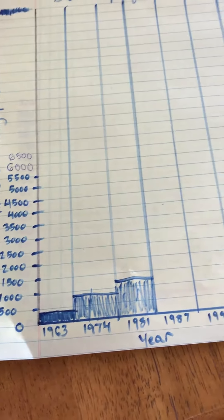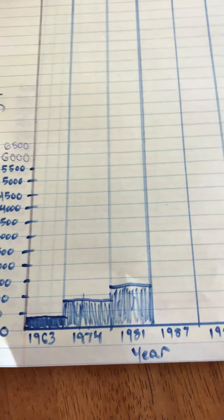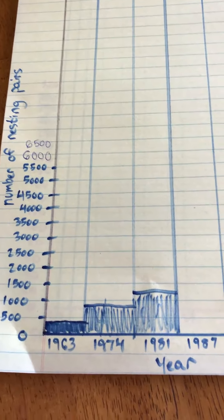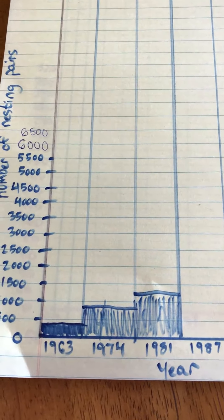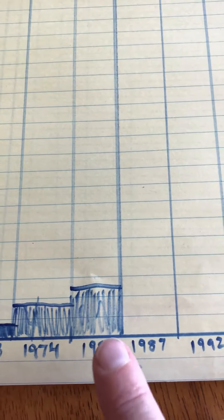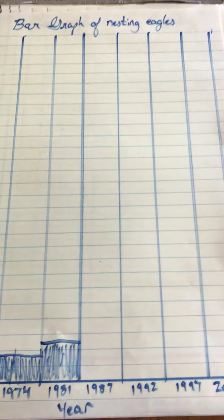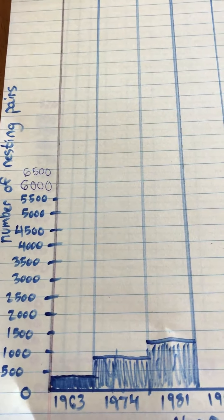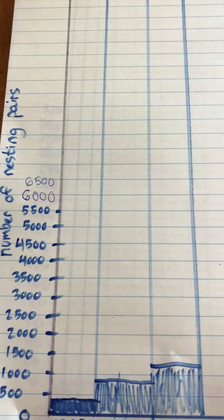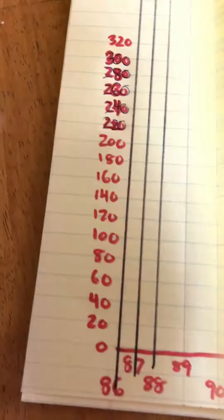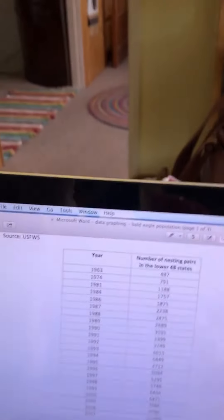Now scientists today, of course, have computers that do this for them. But it's good to learn how a bar graph is created. And I think you'll be surprised to see how the population of eagles goes up when you finish this graph. So you can do one of these graphs at home. I'm going to show you one other kind of graph for the other data that you'll have tomorrow.